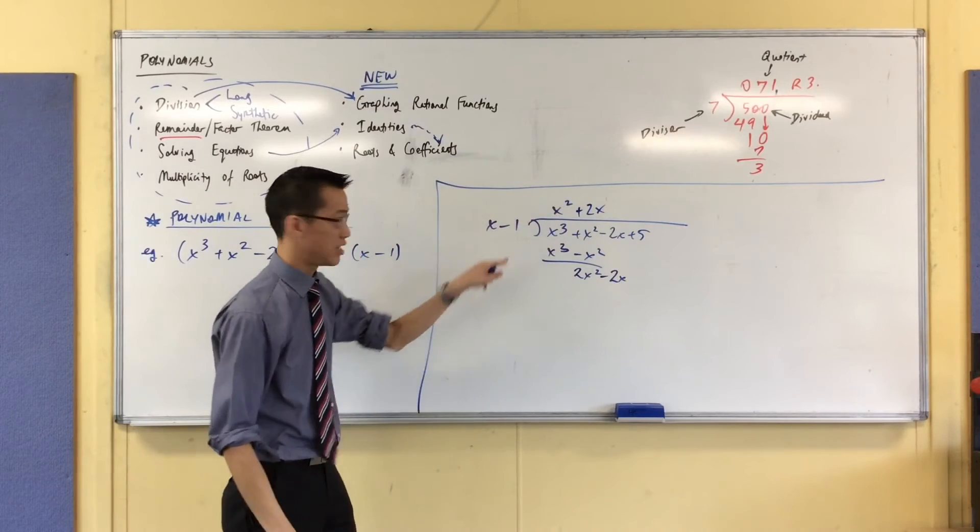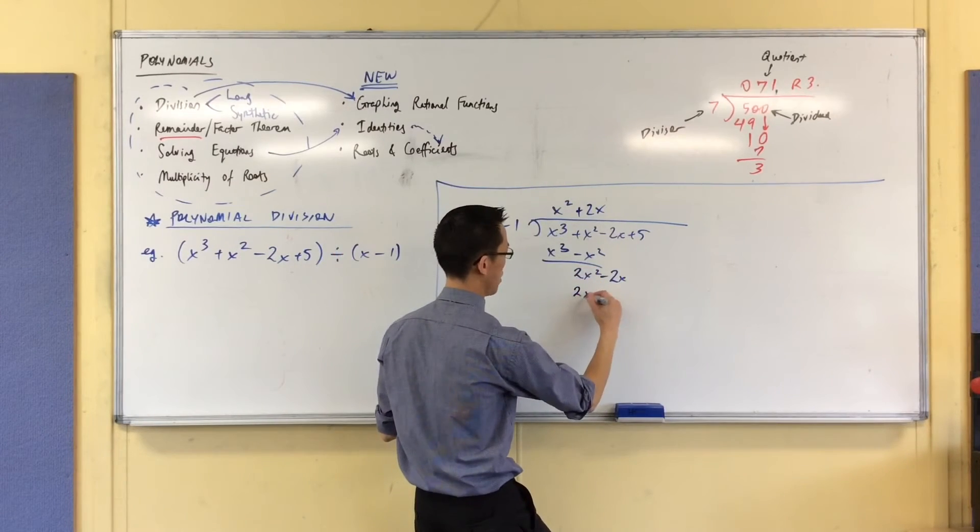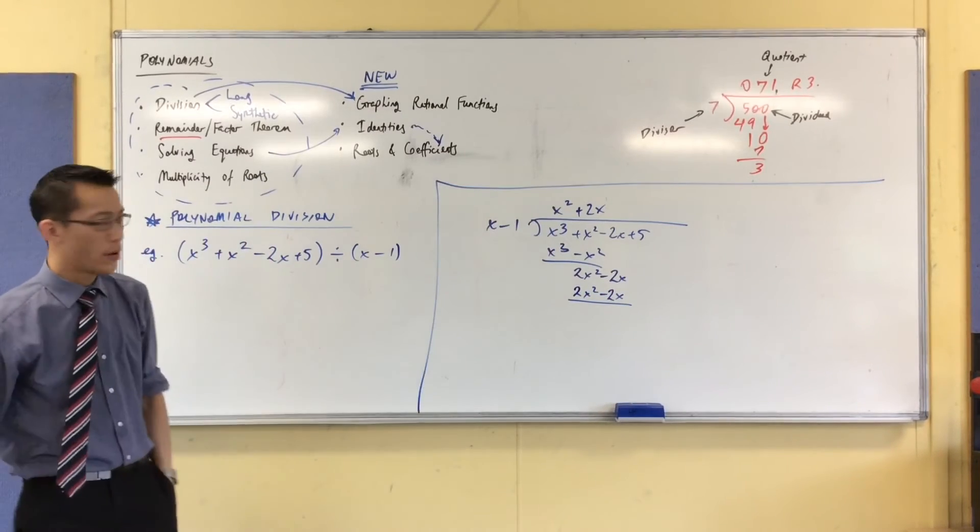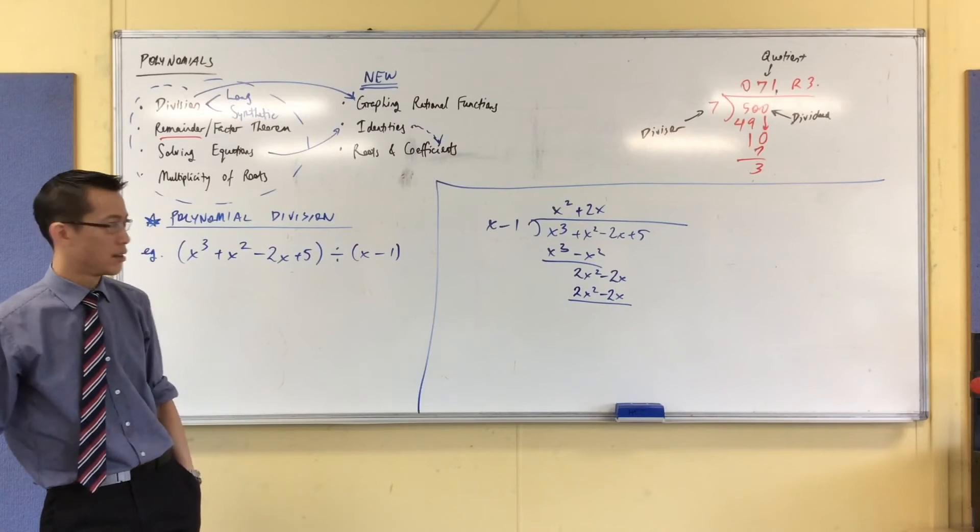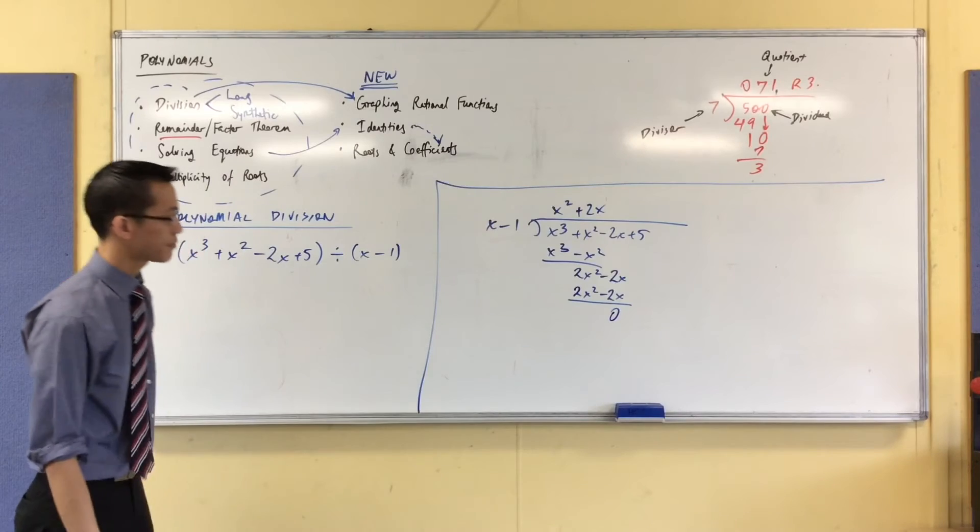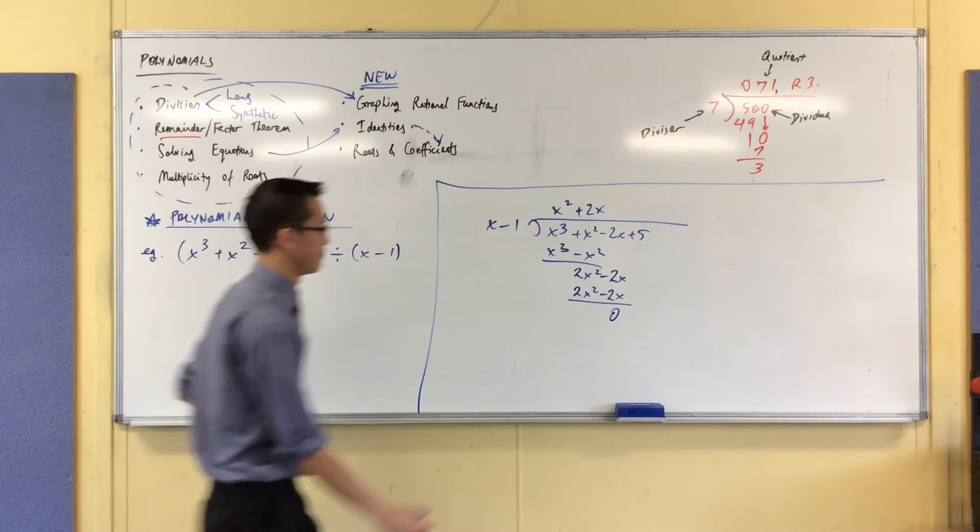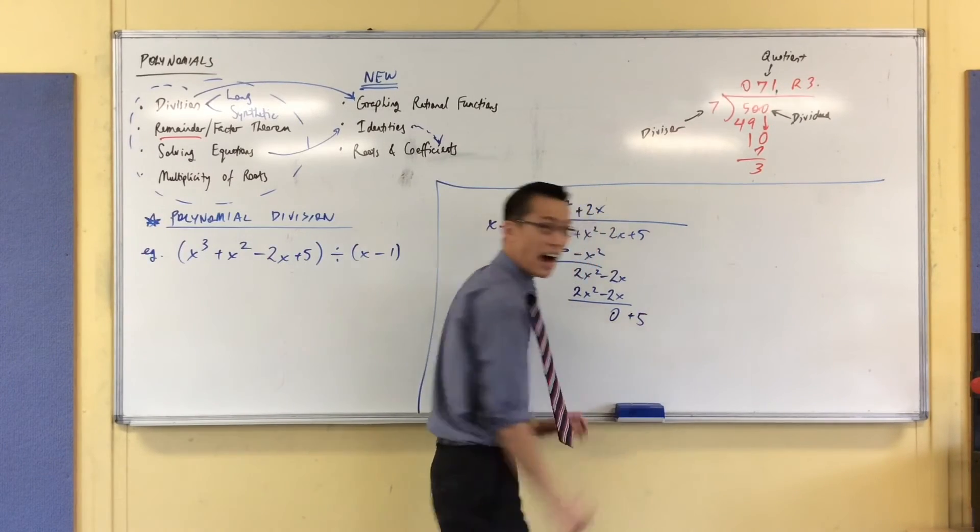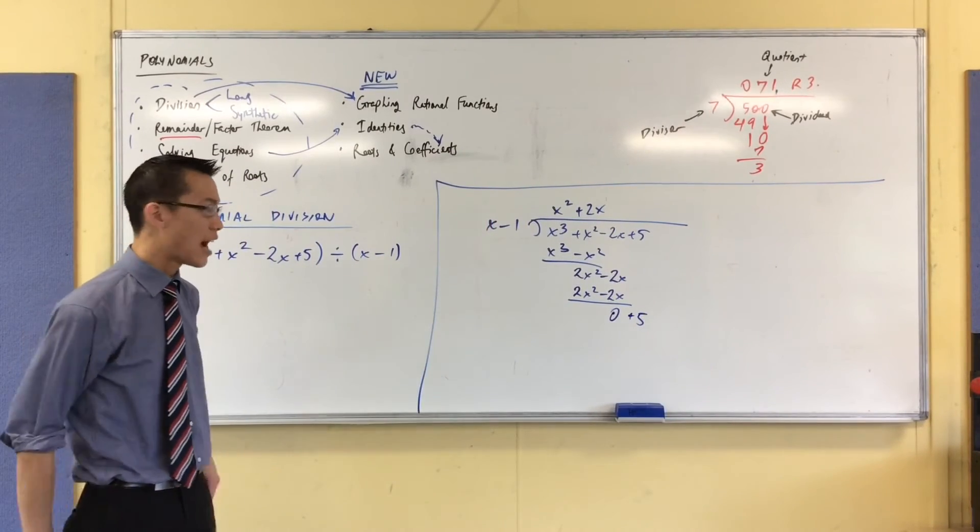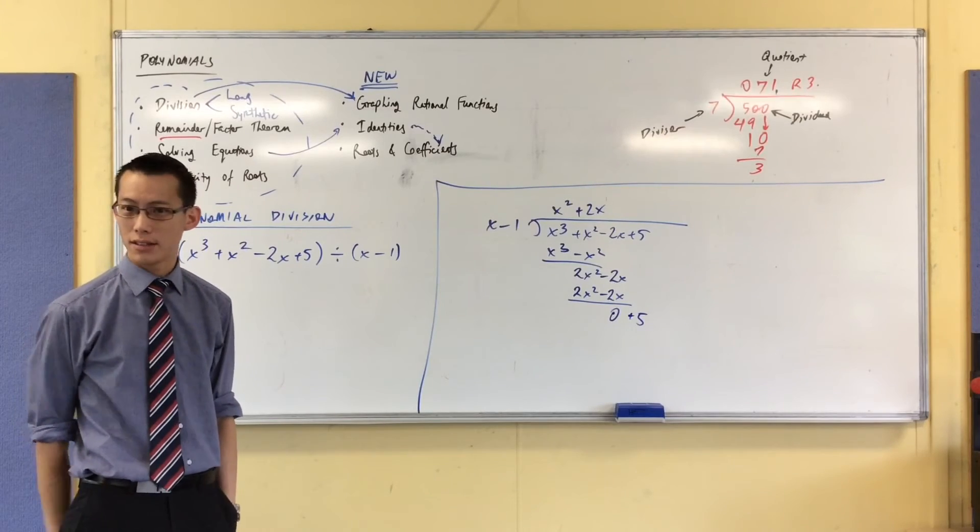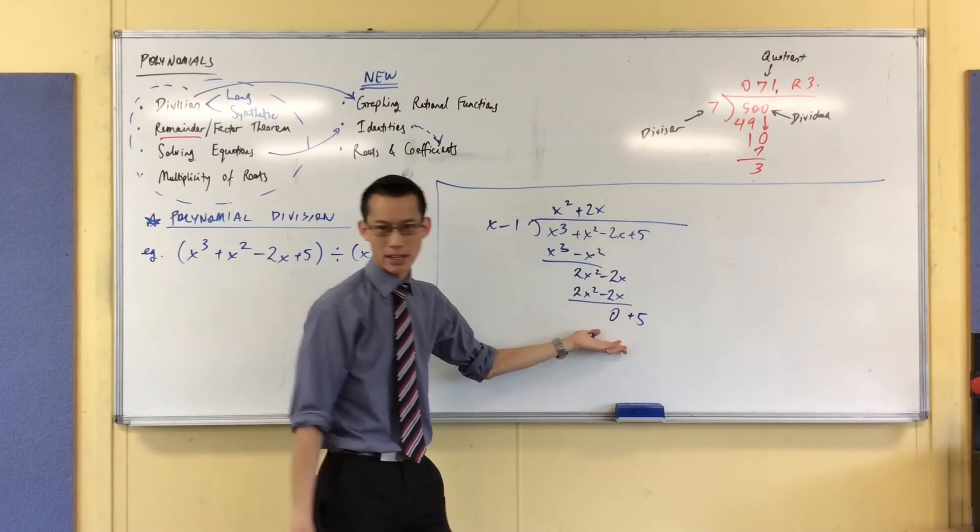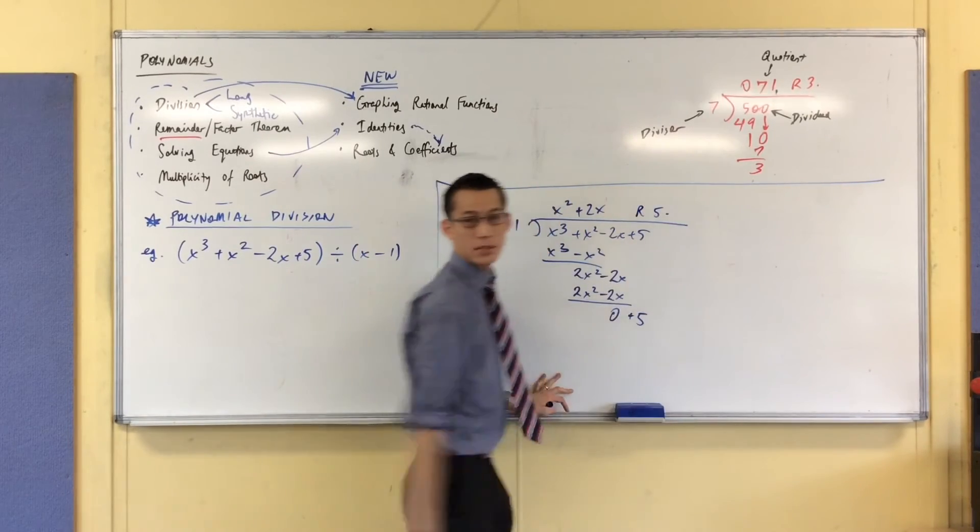And I'm going to continue down. So I've got 2x squared minus 2x. Now, what do I got here? Minus 2x minus minus 2x. So that's zero. So what do I do with that? Plus 5 to the 1. Now, I already know. I already know that I can't fit any x's into that. So in fact, I've already ended up at my remainder. Does that make sense? Like, I end up at the remainder when I know I can't go any further. And I can't go any further. So there's my remainder. You happy with that?